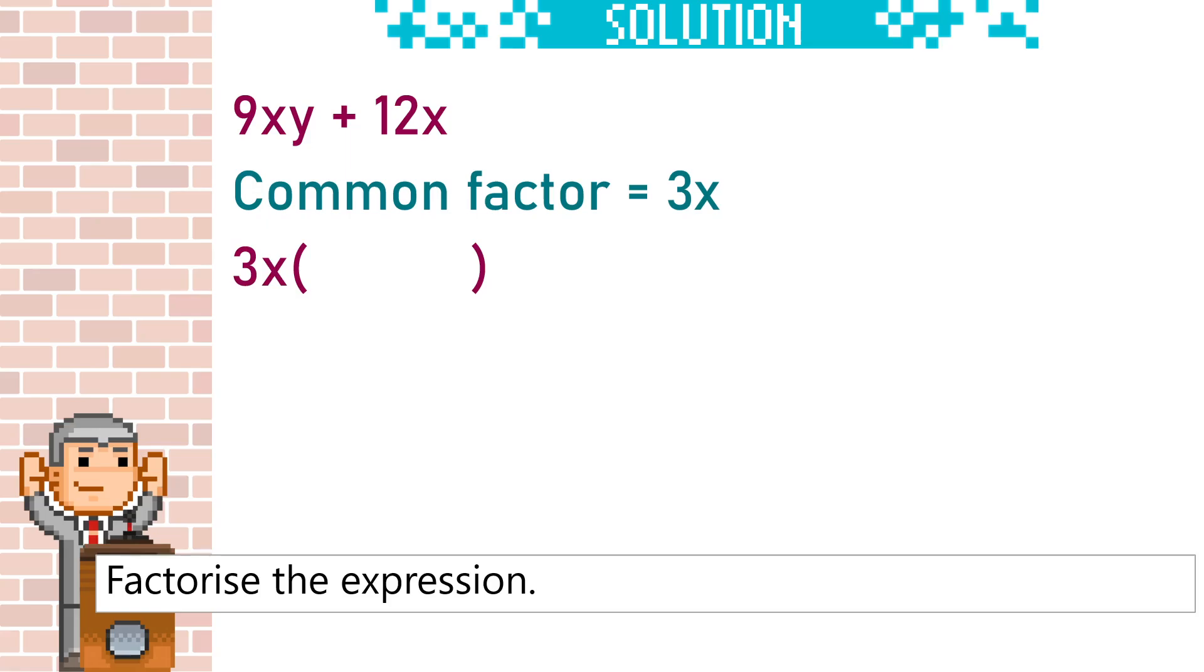The 12x. 12 divided by 3 is 4. And x divided by x is just 1. So it would be 4 times 1, which would just be 4.